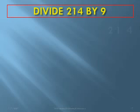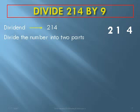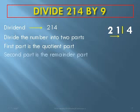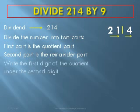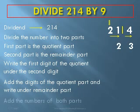We take a second example: divide 214 by 9. The dividend 214 is divided into two parts — 21 and 4. The first part is the quotient part and the second is the remainder part. We write the first digit of the quotient part under the second digit — that means 2 is written under 1. Then add the digits of the quotient part and write the result under the remainder part: 2 plus 1 equals 3, written under 4.